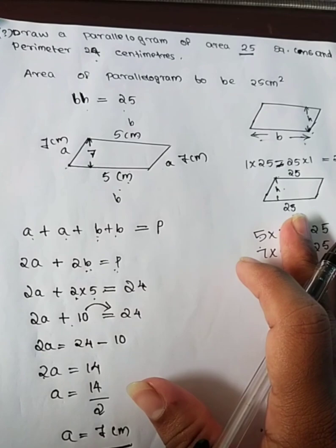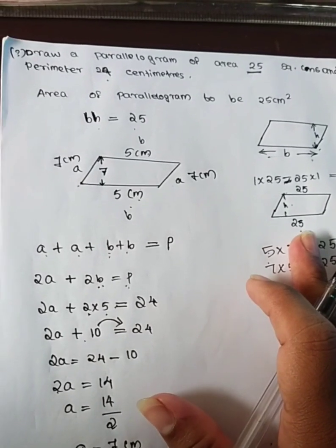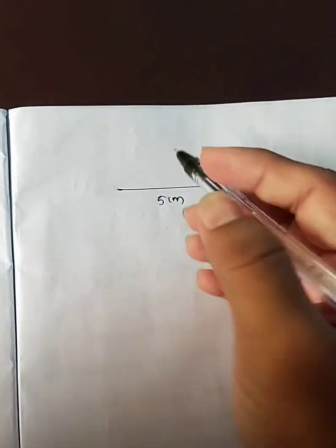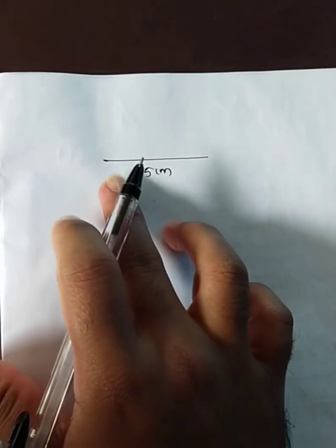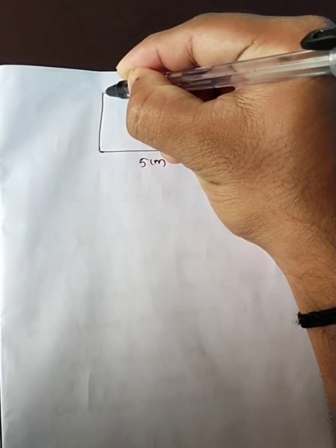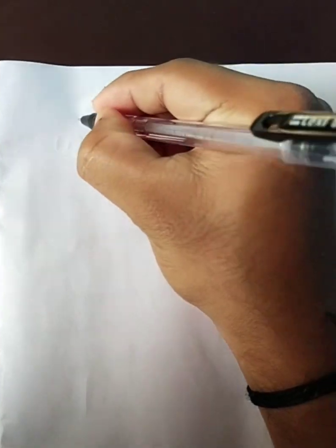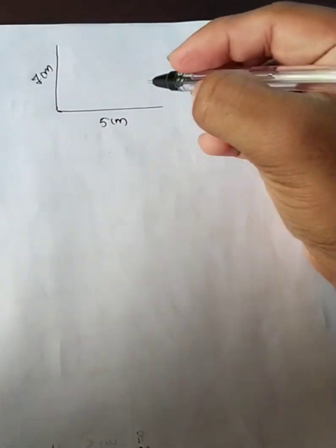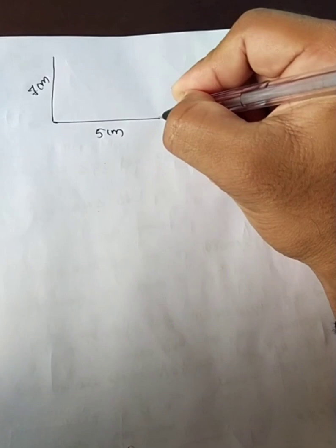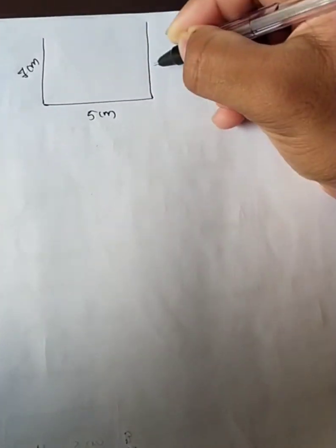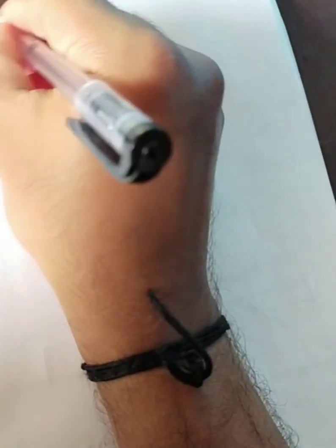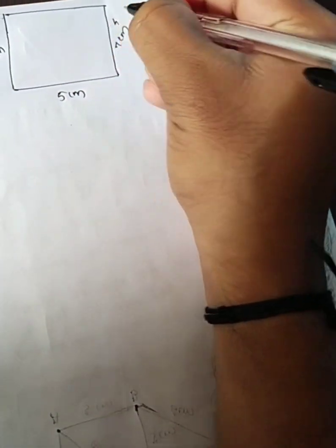So we have a equals 7 and b equals 5. This is 5 cm. We can see the height is 7 — this is 7 cm. Here is b and here is H.